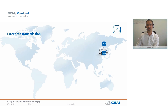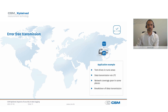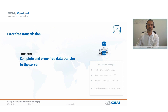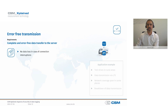Now that data has been reliably recorded, it is often transferred to a server via cellular modem or WLAN. Consider this application: test drives take place in rural areas, measurement data is uploaded to a server via mobile radio, network coverage is poor, and data transmission is often interrupted. In such a difficult situation, it is important that the data to be transferred to a server arrives at its destination complete and error-free. This means the data remains complete despite connection interruptions, and it must be absolutely ensured that the measurement data is error-free even after radio transmission.